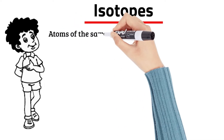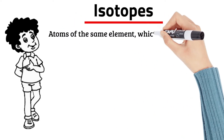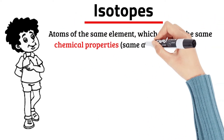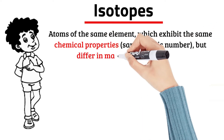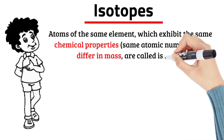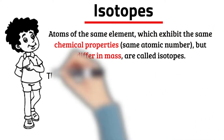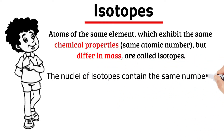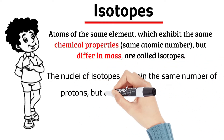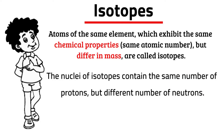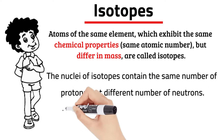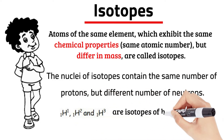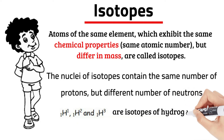Atoms of the same element, which exhibit the same chemical properties — that is, of same atomic number — but differ in mass, are called isotopes. The nuclei of isotopes contain the same number of protons but different number of neutrons. For example, hydrogen, deuterium, and tritium are isotopes of hydrogen.